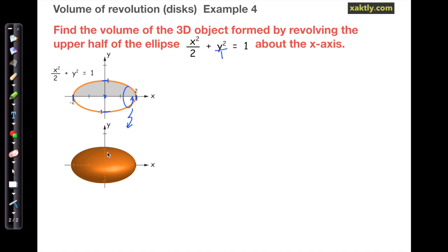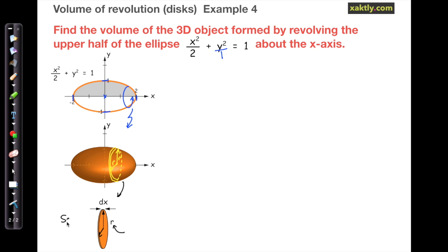This figure is a perfect candidate for integration with disks. We can draw in disks that are perpendicular to the x-axis. They have a width of dx and they can be stacked up to reproduce this figure. They have circular cross sections, and if we drew in a z-axis coming out of the page, the radius in the y direction and the radius in the z direction would be exactly the same.